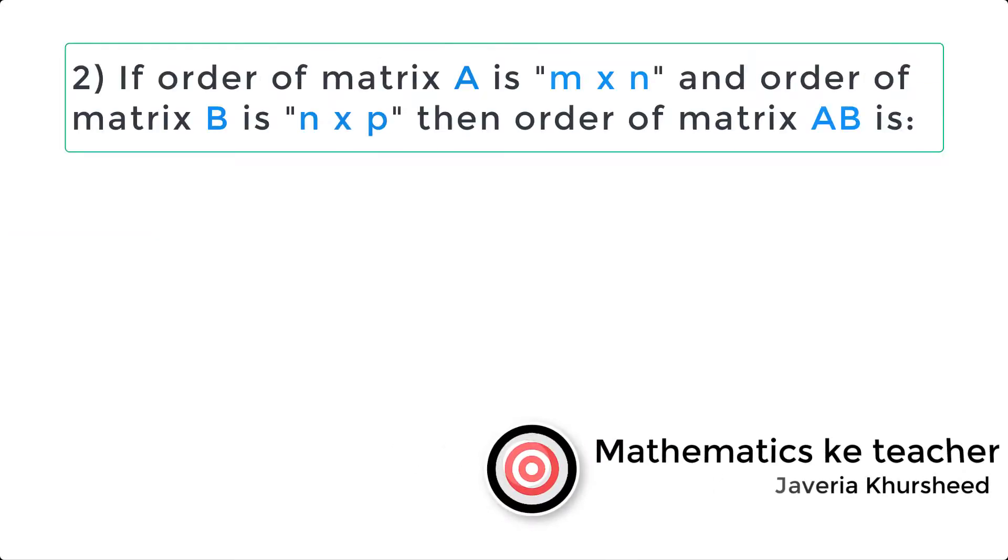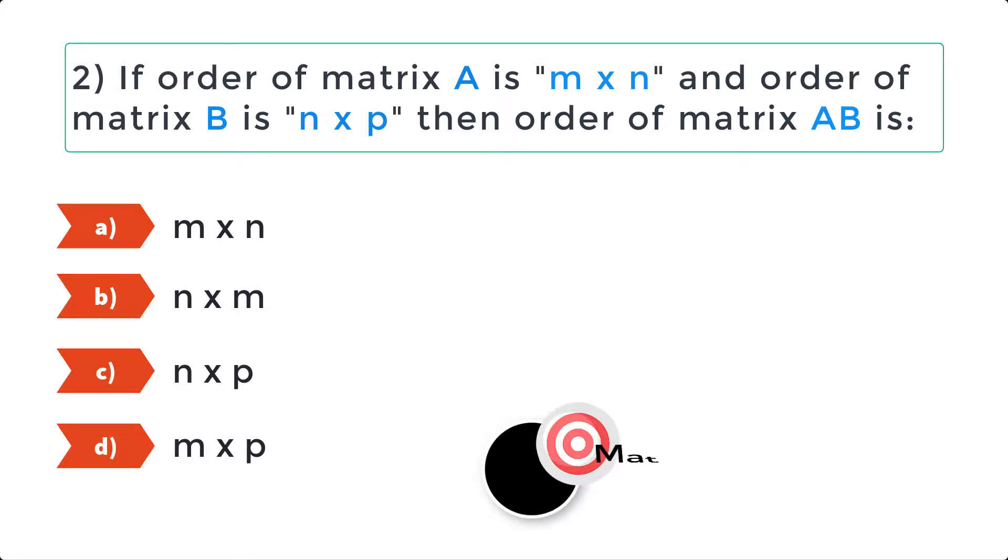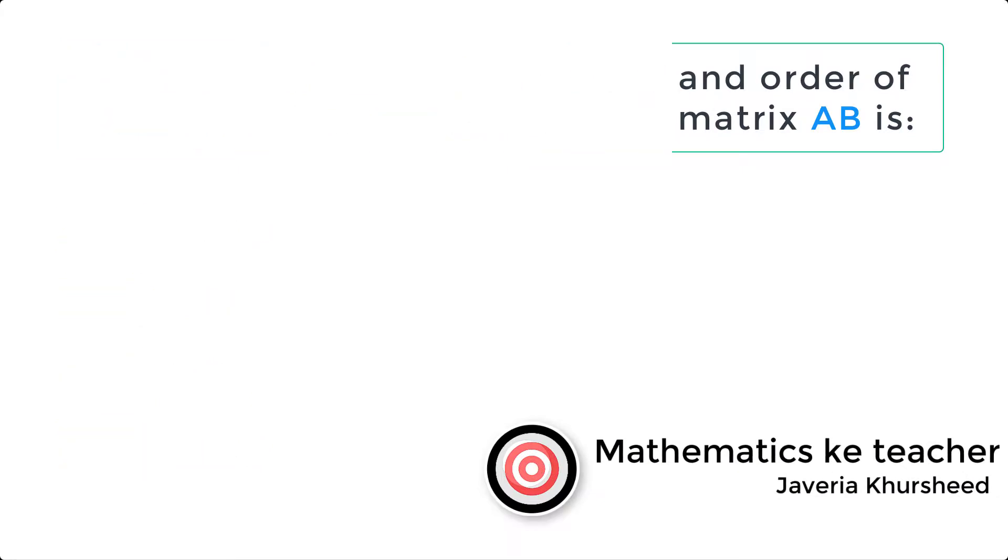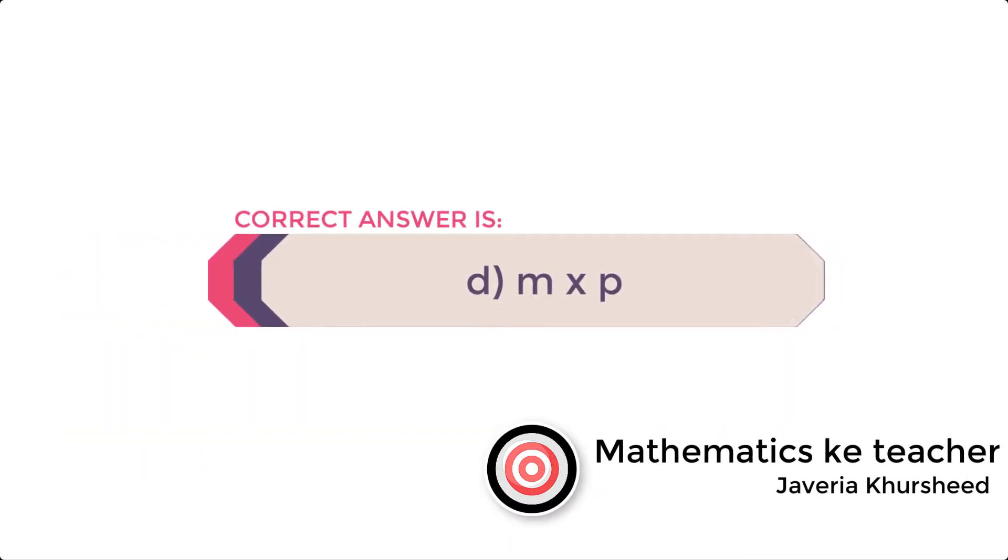Question 2: If order of matrix A is m × n and order of matrix B is n × p, then order of matrix AB is: A. m × n, B. n × m, C. n × p, D. m × p. Correct answer is D. m × p.